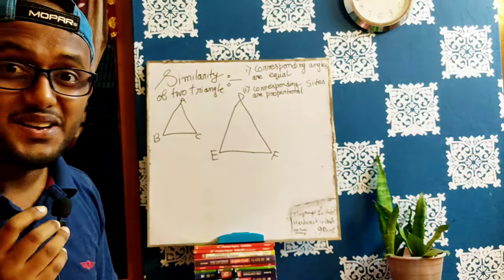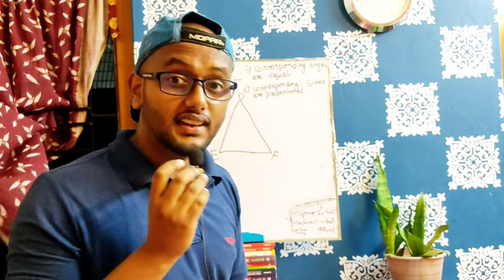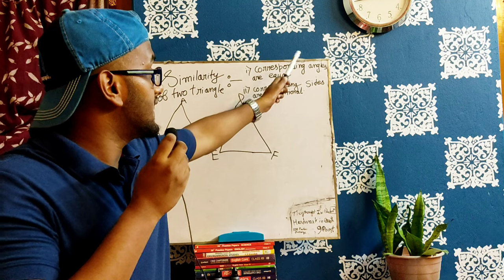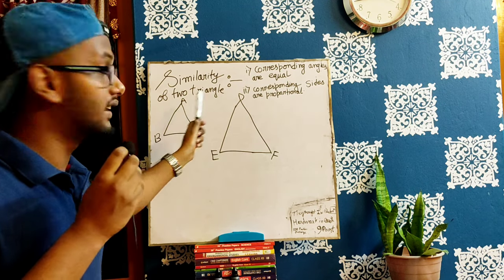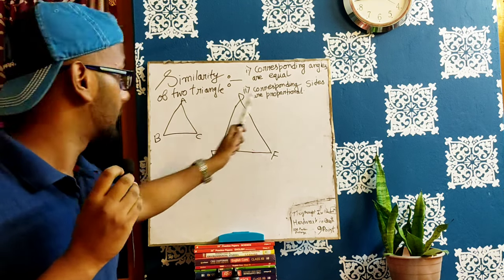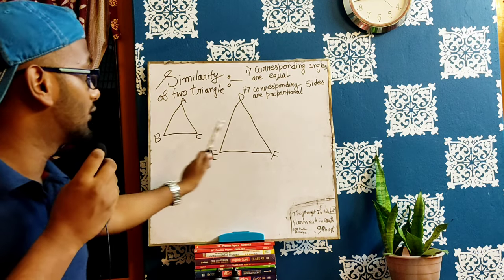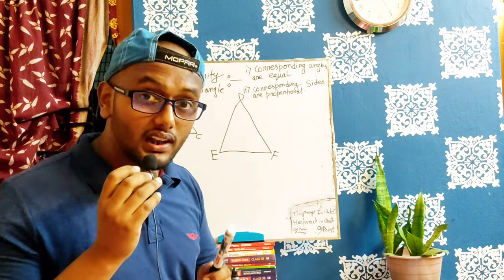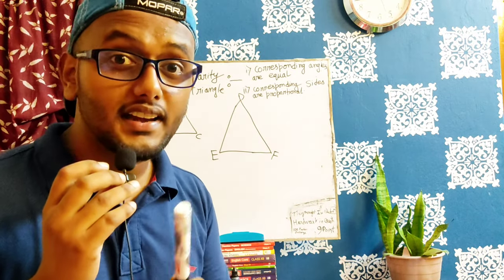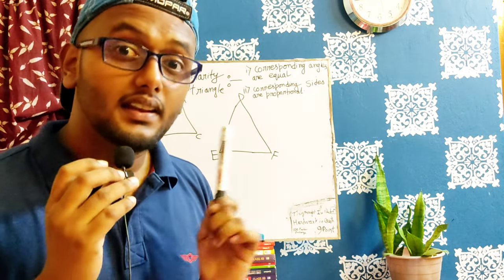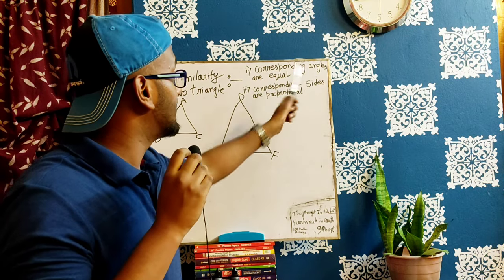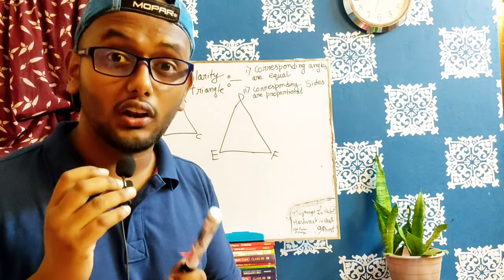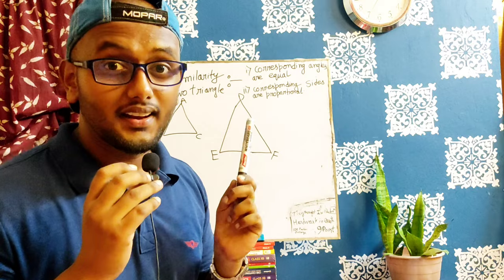There are conditions for the similarity of triangles. First, the corresponding angles are equal — angle equals angle, angle equals angle, angle equals angle. That is condition number one for similarity. Next, if corresponding sides are proportional, that is the second condition.